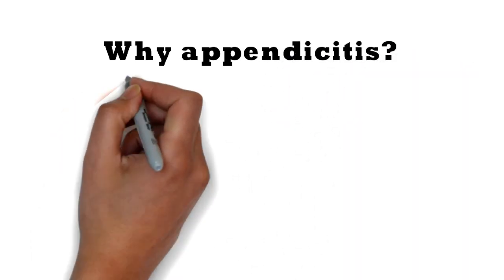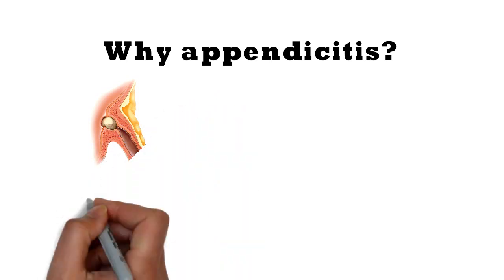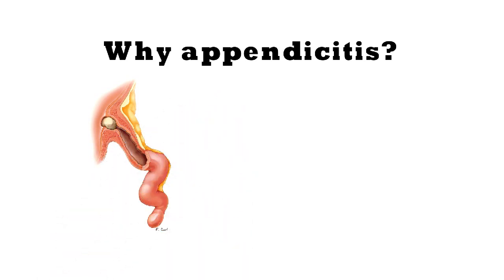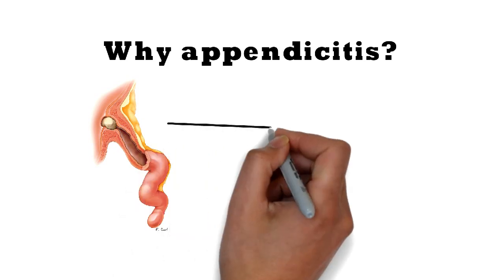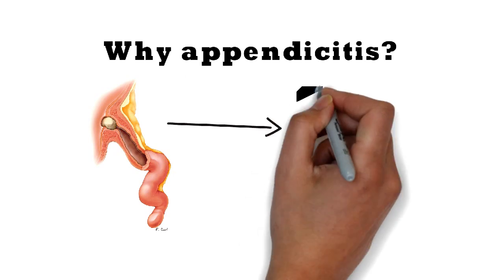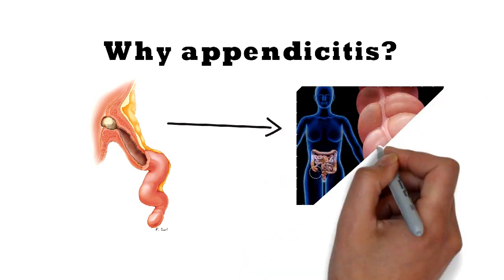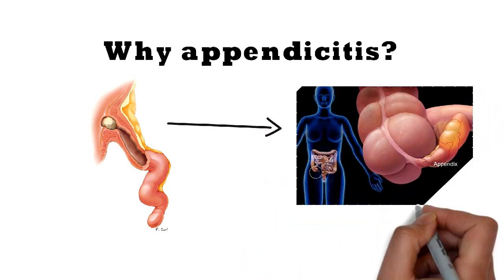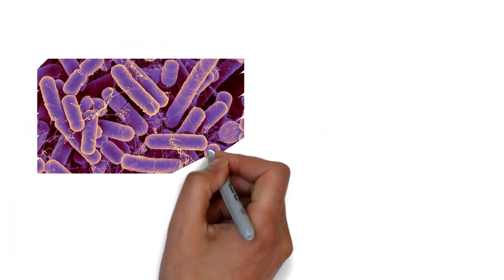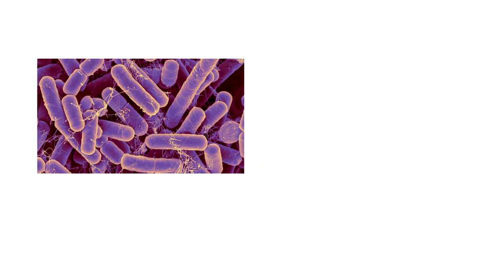The cause of appendicitis is luminal obstruction of the appendix. This occurs secondary to fecal stasis or fecaliths, lymphoid hyperplasia, fruit and vegetable material, parasites such as Ascaris, and tumors. Tumors comprise around 1% of the causes, so it is important to send the specimen for histological examination. Luminal obstruction leads to progressive distension of the appendix and bacterial stasis.